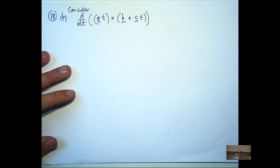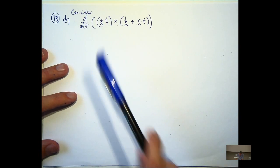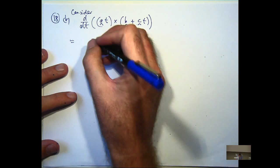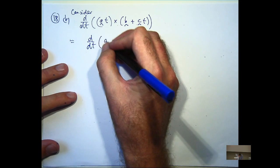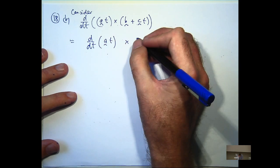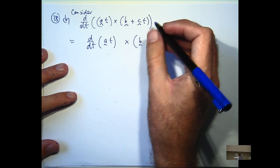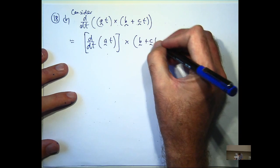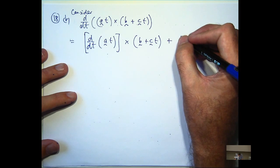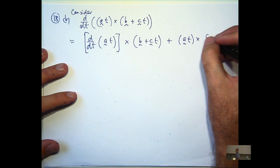With this cross product, we've got a product rule, and the order is really important. This is like over here. You've got to keep the order.